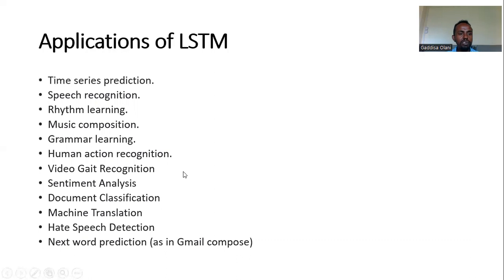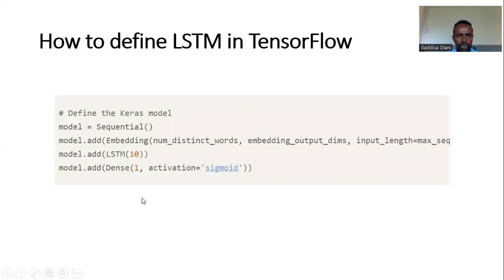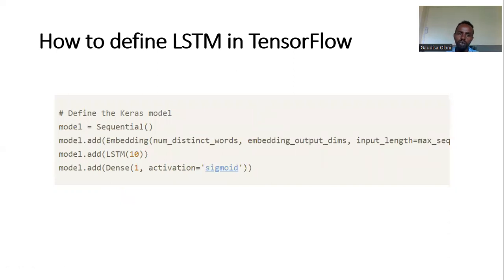There is a more advanced version of LSTM called the Transformer, which uses an attention mechanism — you may read about this. It is straightforward to define an LSTM model just as we do for a convolutional neural network.